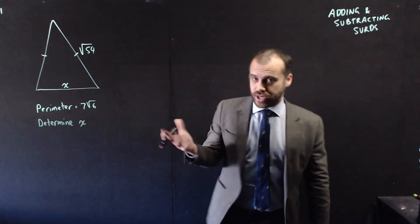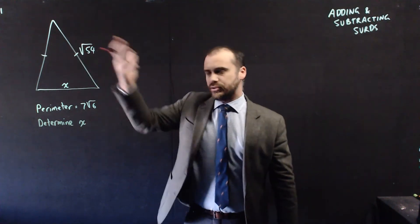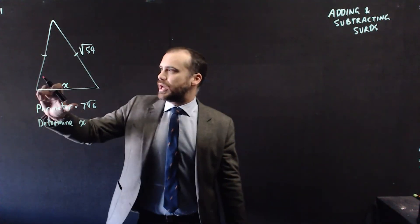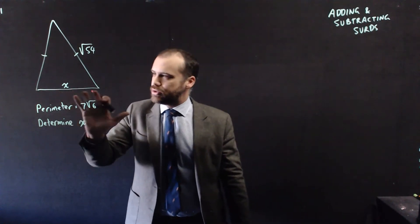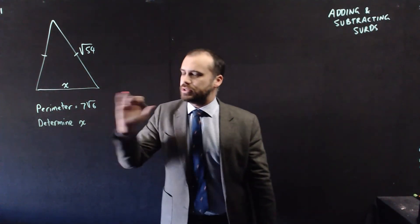We know how to add and subtract surds. We can do any kind of adding and subtracting, like a difficult question here, a complex question. So we have an isosceles triangle here. We don't know the length of the base. But we do know the perimeter of the triangle is 7 root 6.